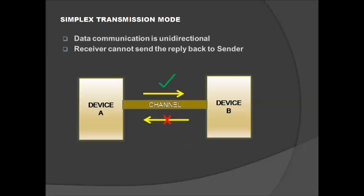In simplex transmission mode, as the name implies, data communication is unidirectional — a receiver cannot send a reply back to the sender. Data can be communicated from device A to device B, but not from device B back to device A. The best examples of simplex transmission are the mouse and keyboard, which send signals to the CPU but never receive controls back from it.